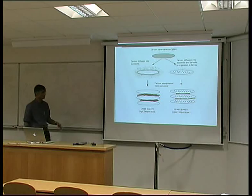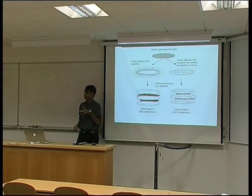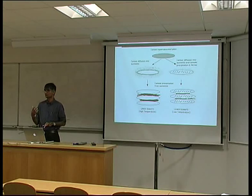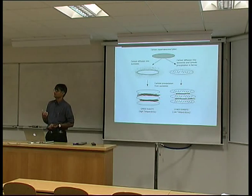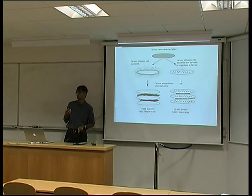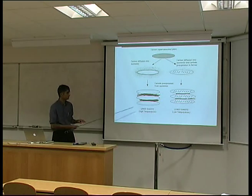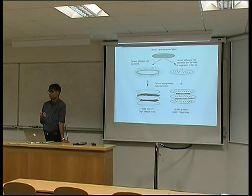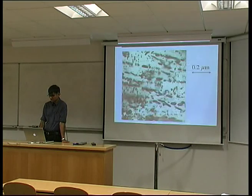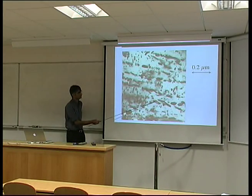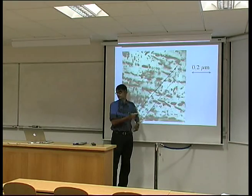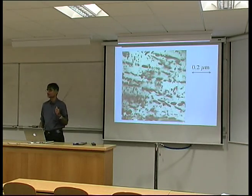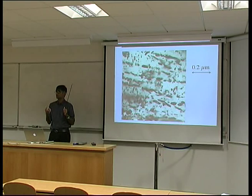One of the problems with bainite as a microstructure is these particles. These particles precipitate during the course of transformation, so we don't have much control over their size or distribution. Bainite steels, in the context of high-strength steels, simply haven't been very successful until fairly recently, because these cementite particles give the material a very low toughness compared with tempered microstructure, where you can control the precipitation process.